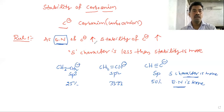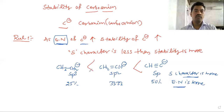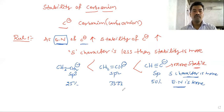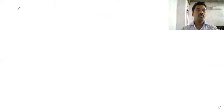So it is more stable. The order of stability follows from the electronegativity relationship. That concludes rule one. Now, rule two.